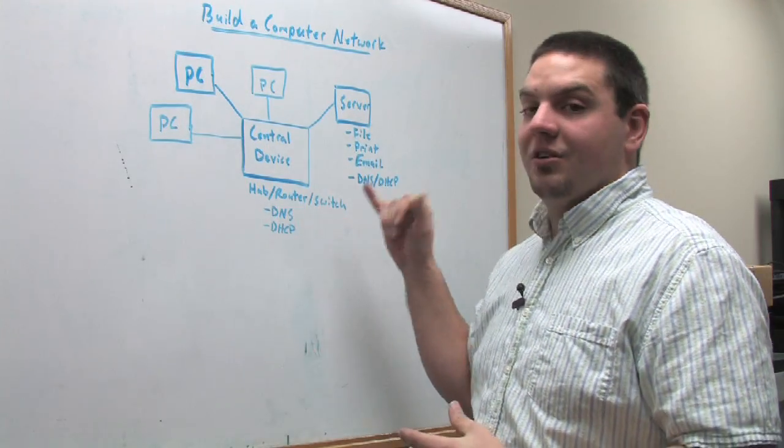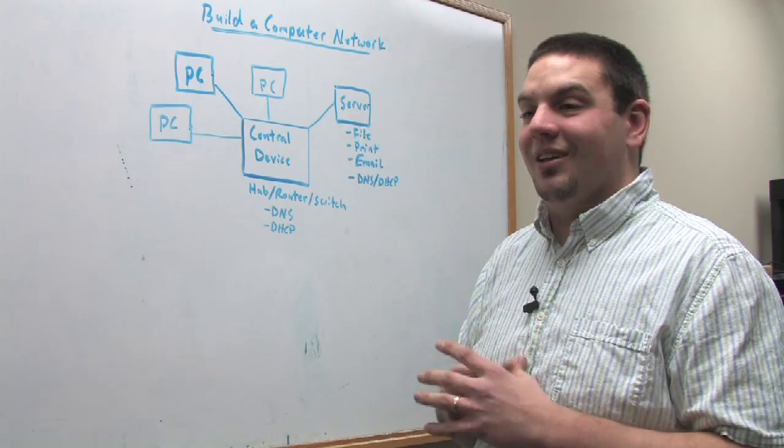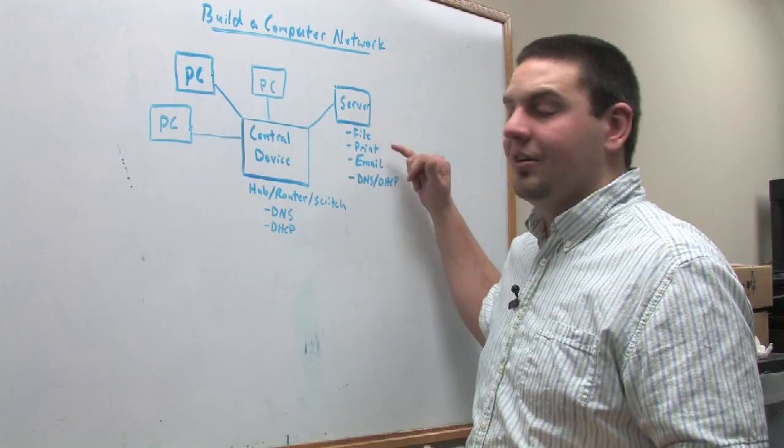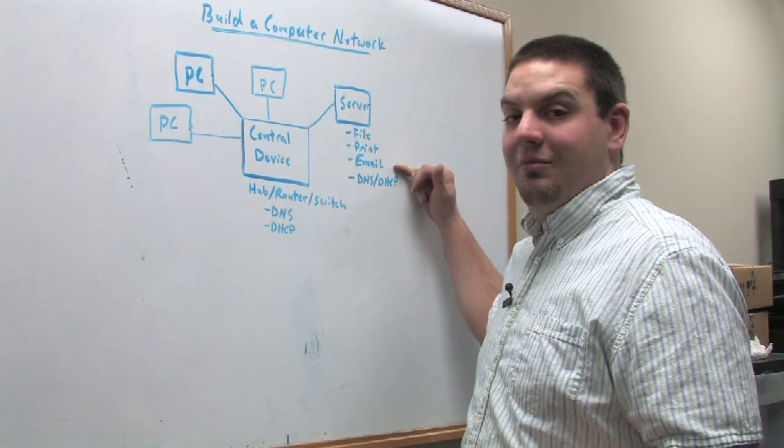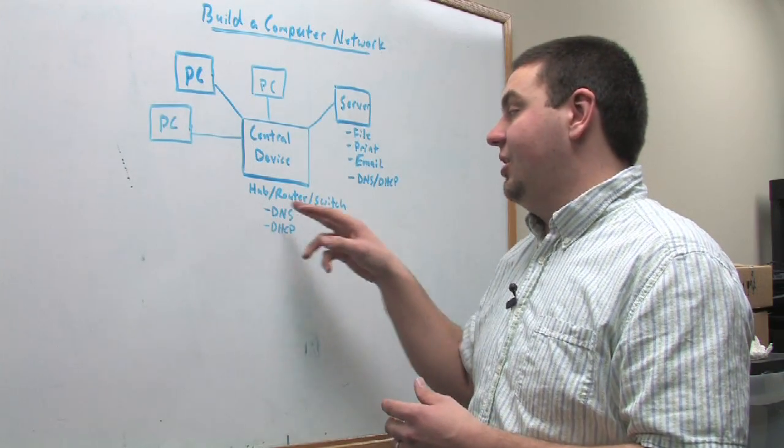And if you were to use a hub or switch, obviously you would need to have a server. Now, with a server, the most essential pieces to a server that you see out there is you'll have a file server, a print server, an email server, and then in the instance of networking, where you're using a hub or switch,